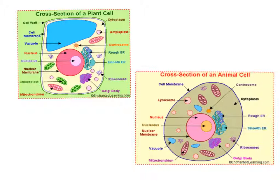The next definition is function. Function is going to be the role of each different part of the plant and animal cell working together to serve a purpose within the plant and animal cell.